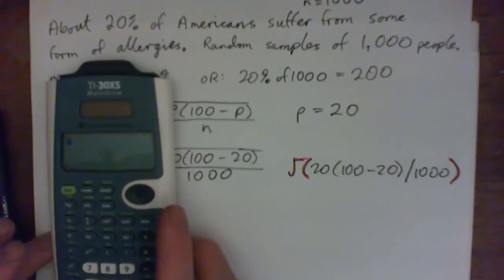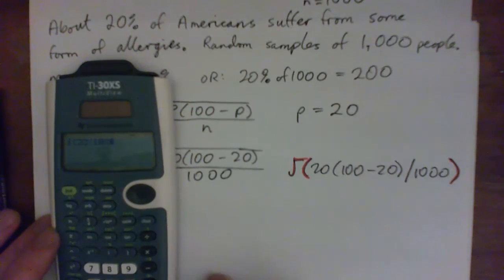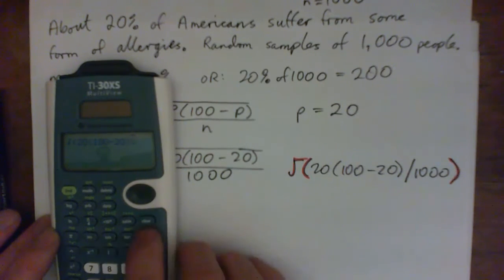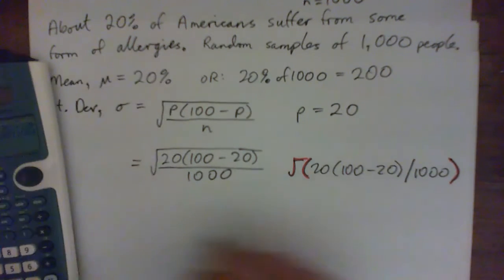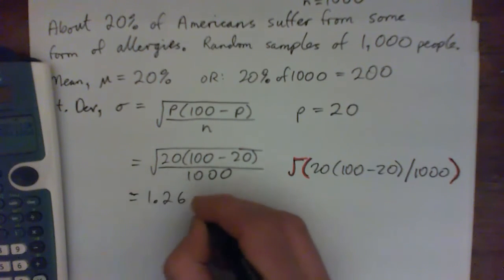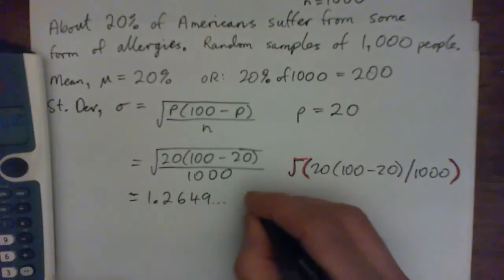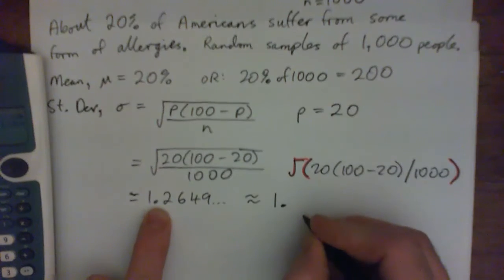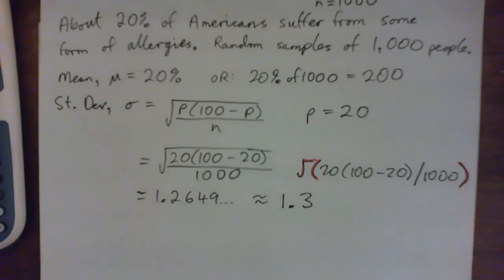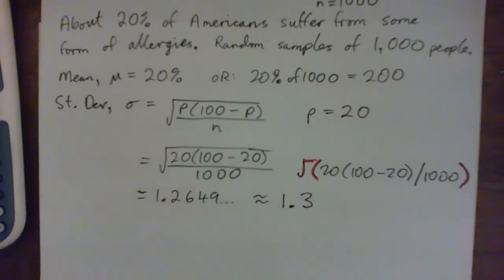Typing it in: 20 times (100 minus 20) over 1000, and that gives us 1.26 — which rounds to 1.3. So we've got the mean and the standard deviation for groups of a thousand people.